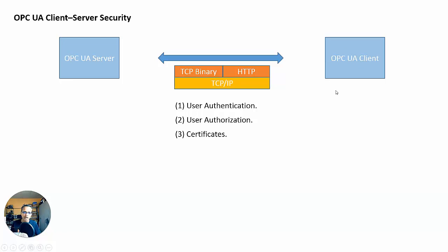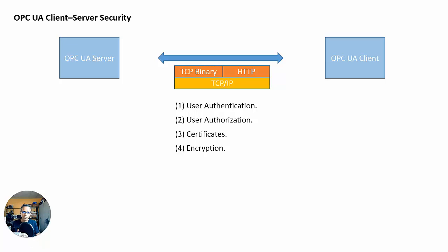So that's another level of security. Every vendor manufacturing an OPC server or client has to go to a third-party service or do what you call self-signing — they must have a certificate, which is basically a file. And we have encryption along with certificates. The certificates will have keys in them — public keys and private keys for encryption. That's another option for the client-server connection: you want encryption, and that's a really good thing.